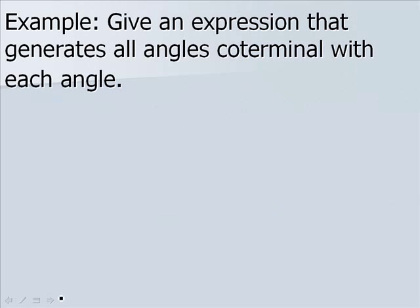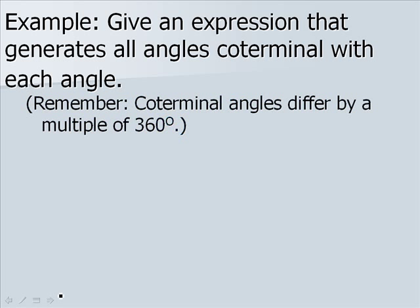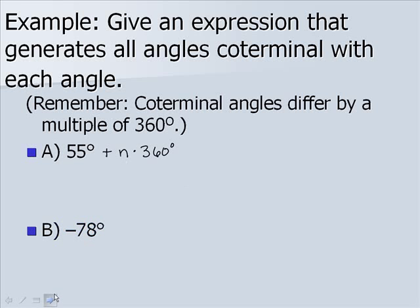Now let's give an expression that generates all angles coterminal with each angle. Coterminal angles differ by a multiple of 360 degrees. For 55 degrees, we add n times 360 degrees, where n is an integer. The same relationship holds true with negative angles — we simply add n times 360 degrees each time to get a new coterminal angle.